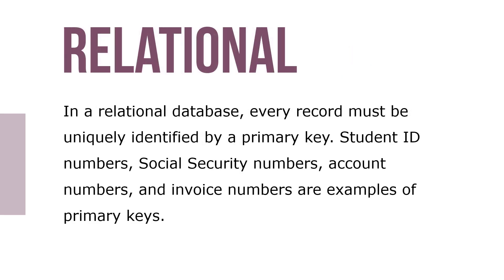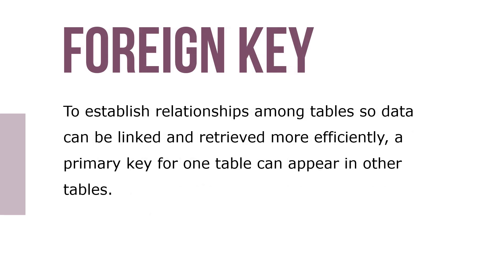In relational databases, every record must be uniquely identified by a primary key. Student ID numbers, social security numbers, account numbers, and invoice numbers are examples of primary keys. To establish relationships among tables so data can be linked and retrieved more effectively, a primary key for one table can appear in other tables.